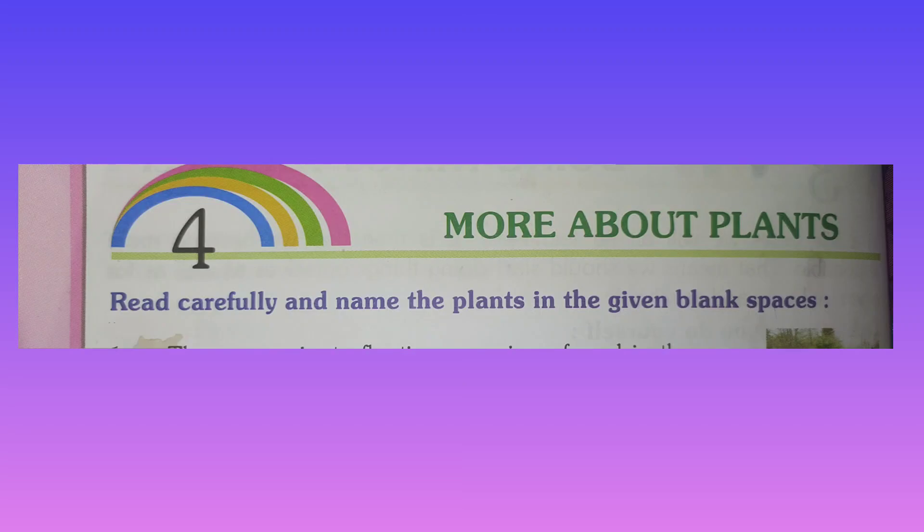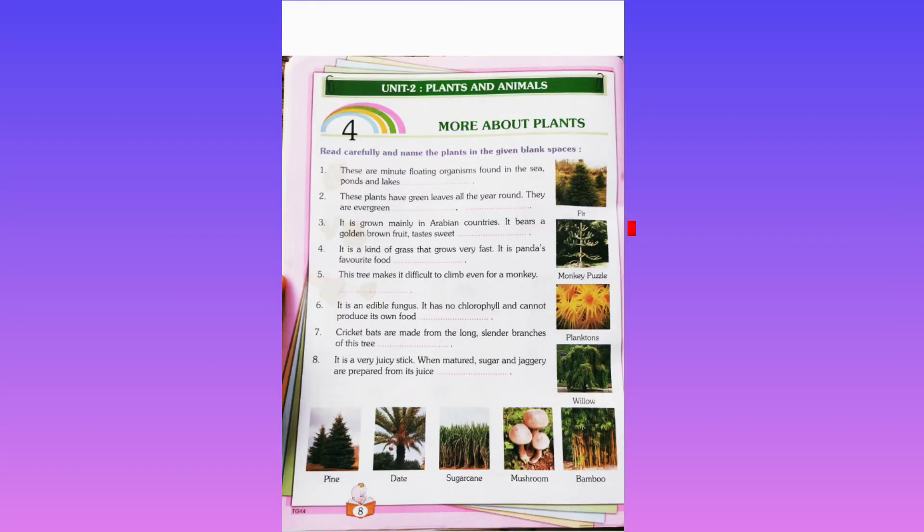Dear students, now see the lesson. Keep your finger on the place where I am going to read. Heading: Read carefully and name the plants in the given blank spaces. Here we can find many plants and we are going to see the details of each plant. Students, see the first one.